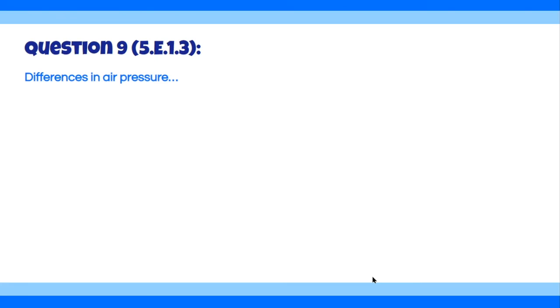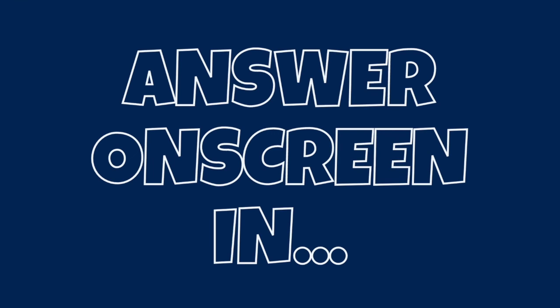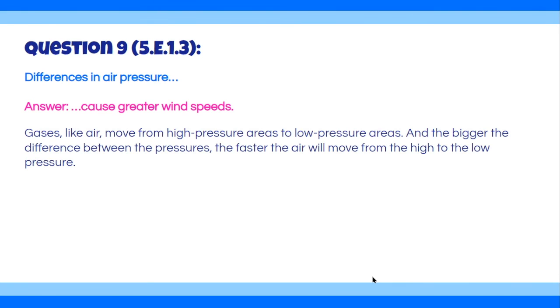Question number nine. Differences in air pressure cause greater wind speeds. Gases, like air, move from high pressure areas to low pressure areas. And the bigger the difference between the pressures, the faster the air will move from the high to low pressure.